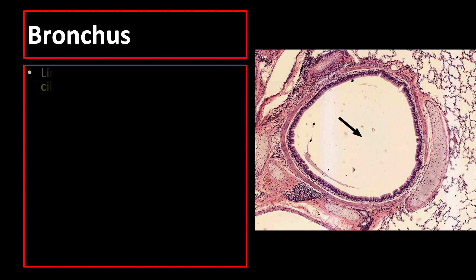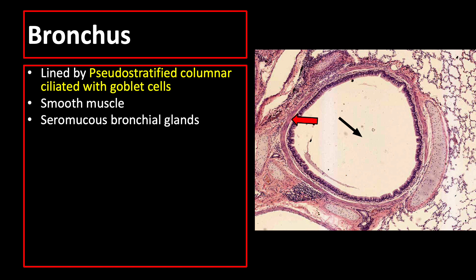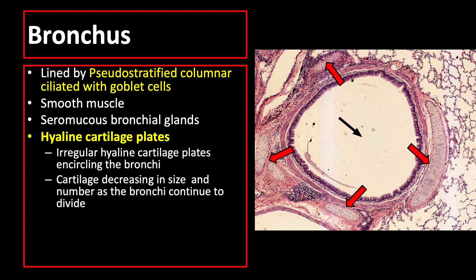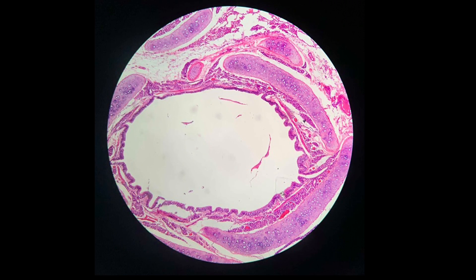The bronchus is lined by pseudostratified columnar ciliated epithelium with goblet cells. Smooth muscles encircle the entire circumference of the bronchus, and underneath are irregular islands of hyaline cartilages. These cartilages decrease in size and number as the bronchi divide and extend distally, and at about 1 mm diameter, cartilage disappears and the airway is called a bronchiole.